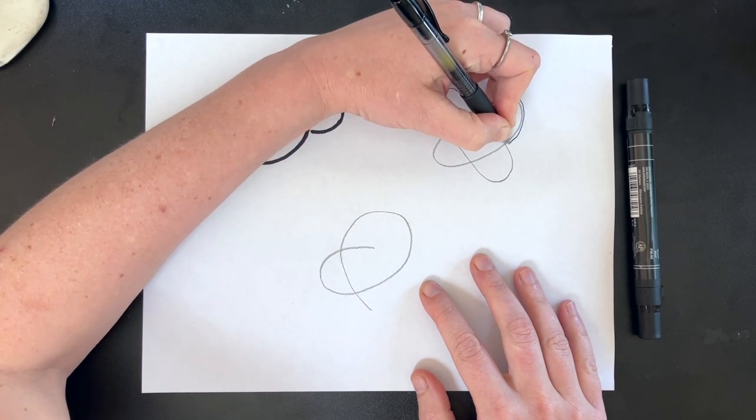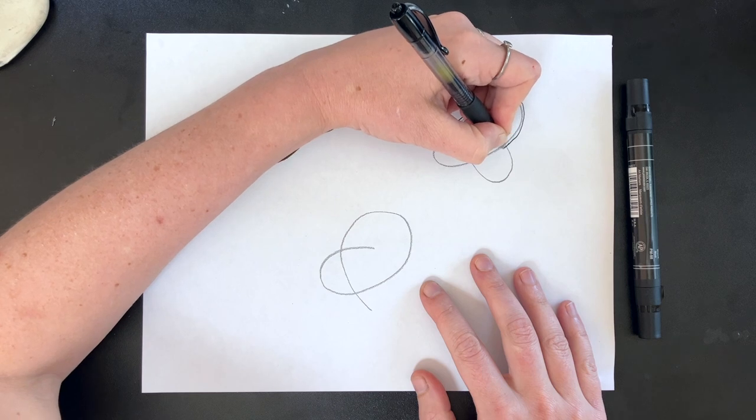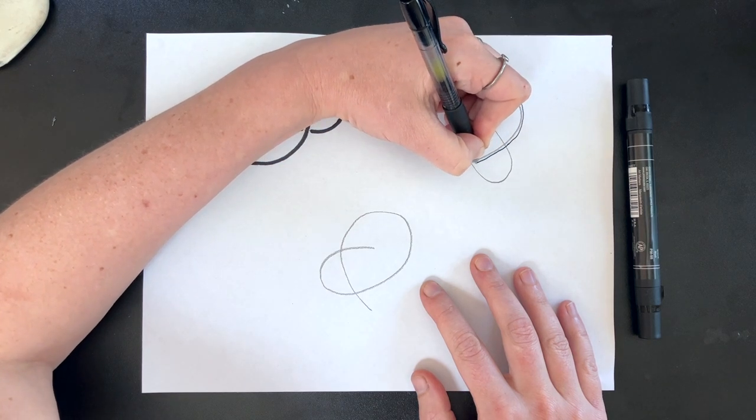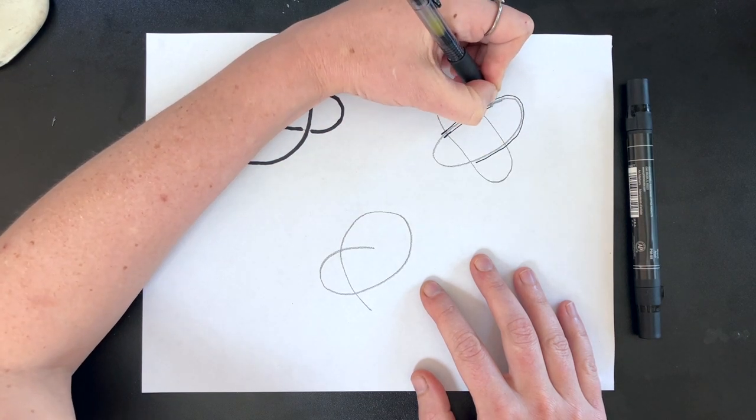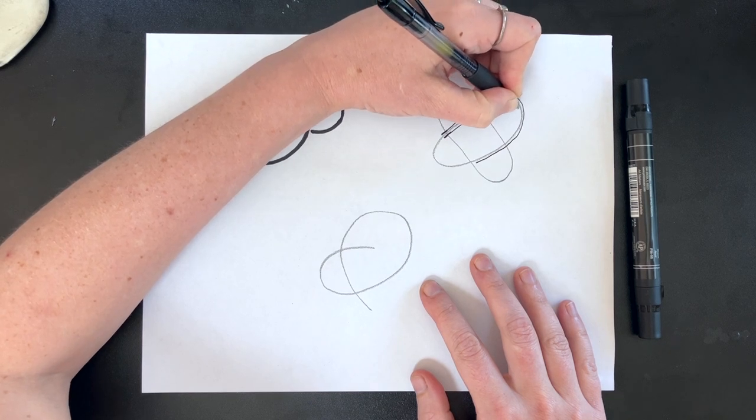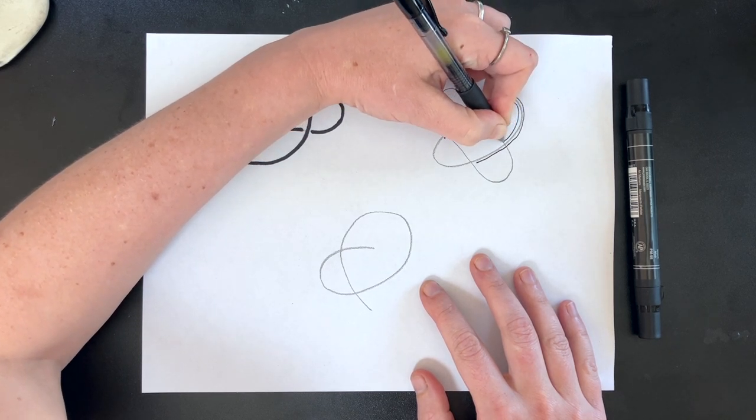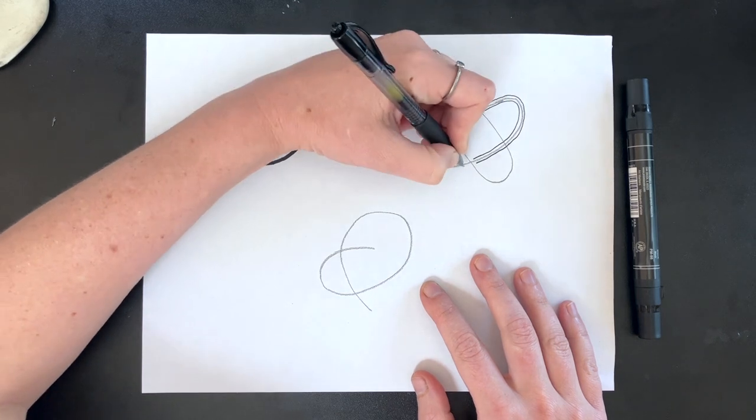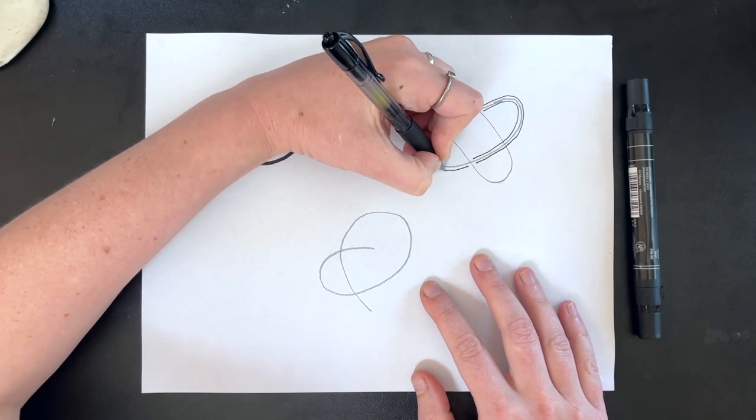Again, we will alternate going over and then under at each successive intersection until we reach where we started or until we reach the end of our line.